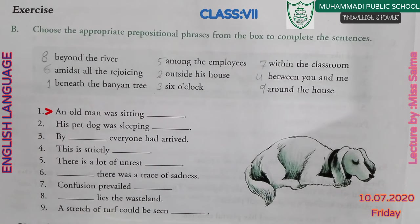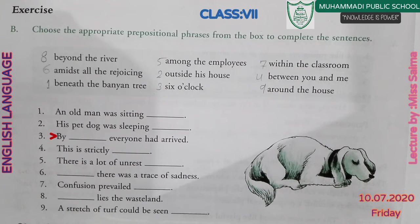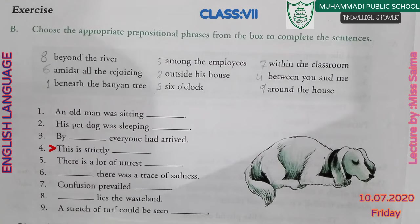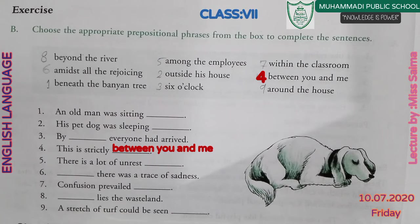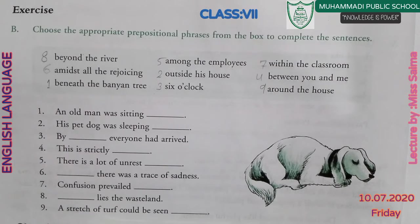Number one: An old man was sitting beneath the banyan tree. Number two: His pet dog was sleeping outside his house. Number three: By six o'clock, everyone had arrived. Number four: This is strictly between you and me. Number five: There is a lot of unrest among the employees. Number six: Amidst all the rejoicing, there was a trace of sadness.